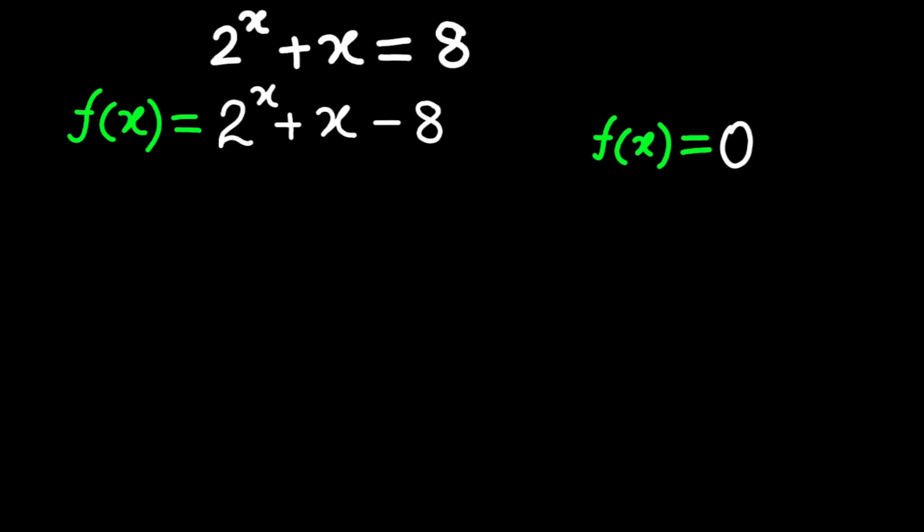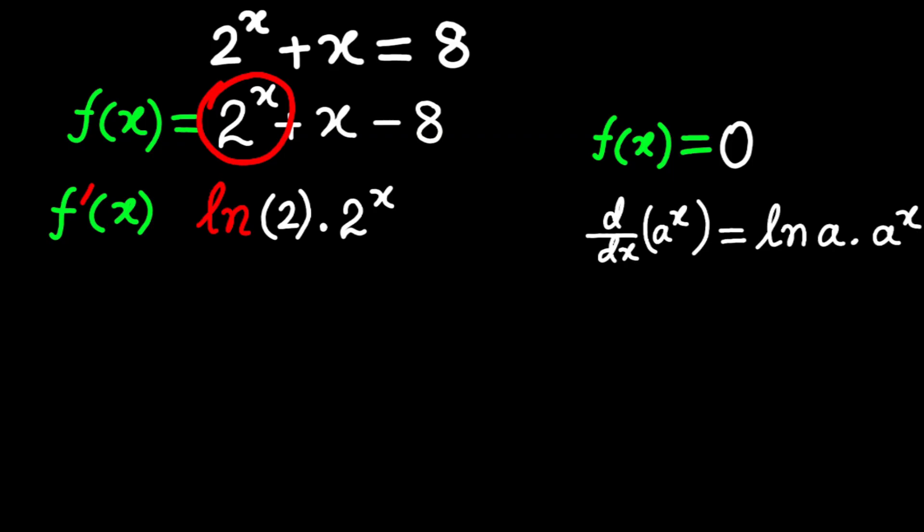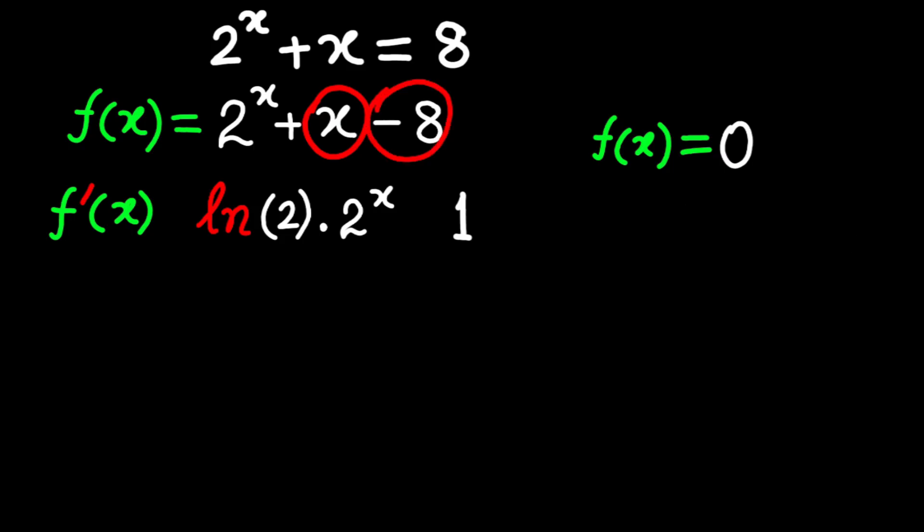First, let's find its derivative, f prime of x. The derivative of 2 to the power x is natural log of 2 times 2 to the power x, because that's the rule for exponentials. The derivative of a to the power x is natural log of a times a to the power x. The derivative of x is just 1, and the derivative of minus 8 is 0. So f prime of x equals natural log of 2 times 2 to the power x plus 1.